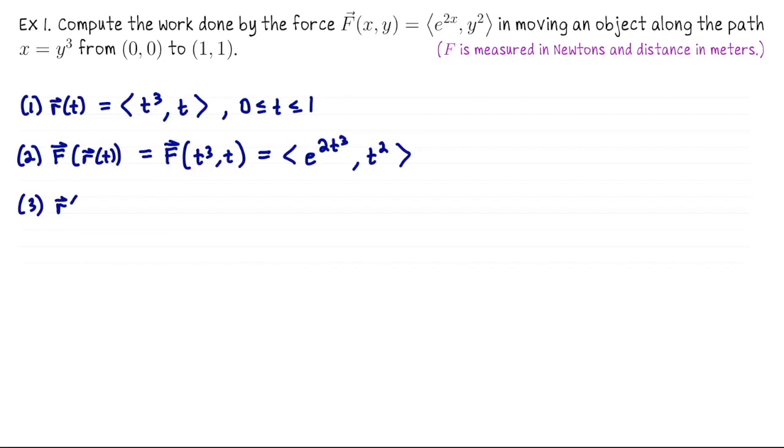Next step is to compute the velocity vector. So term-by-term differentiation gives us (3t², 1). Now we can set up our integral.